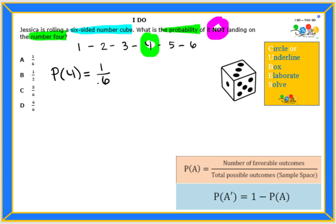So now this would be the probability of landing on four, but we did not want to land on four. It said, what is the probability of not landing on four?